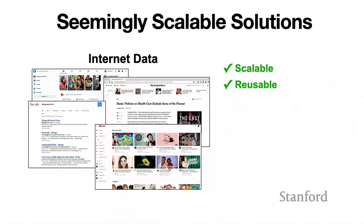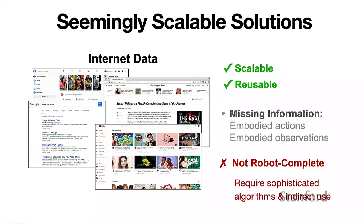Similarly, for internet data — you can download a lot of images and videos from the internet, which is in some sense very scalable and you can reuse it for different projects. However, most internet data is missing very critical information for robot learning — you cannot get those embodied actions or observations. As a result, we call it incomplete for learning robot policies. It's not saying they are irrelevant — they're still very important — but oftentimes you do need to design much more sophisticated algorithms to make use of that data in an indirect way.